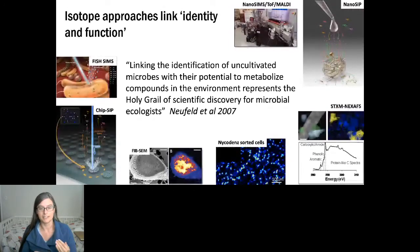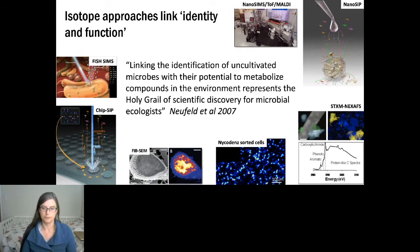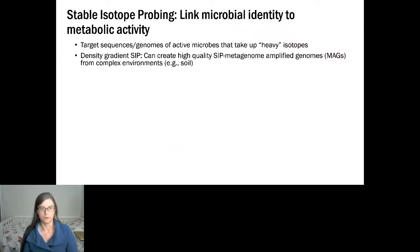There are a number of ways to do this using isotopic tracers to link identity and function. Isotopes are elements — rare versions that are either lighter or heavier — and they can be imaged, separated, and sequenced. I've listed a few examples of different isotope techniques, but the one I'm going to talk about today is density gradient SIP.